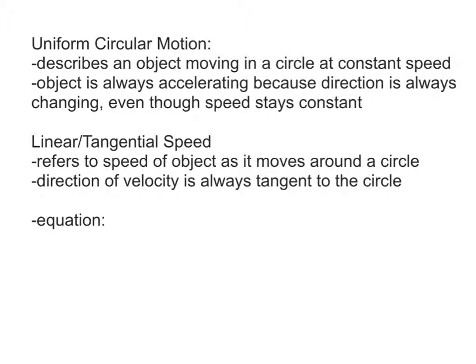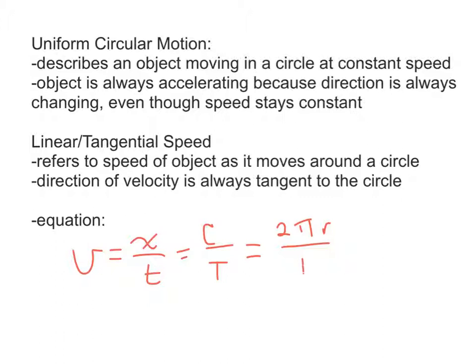We use speed because it's kind of always a given what direction the object is moving. For our equation, we know that speed equals distance over time. When dealing with circles, the distance is the circumference, and the time would be the period. So the circumference of a circle is 2π times the radius over the period. Linear speed, or tangential speed, equals 2πr over T.